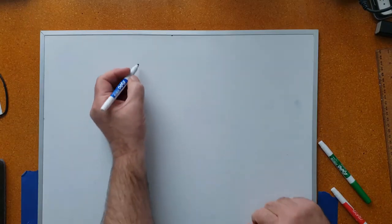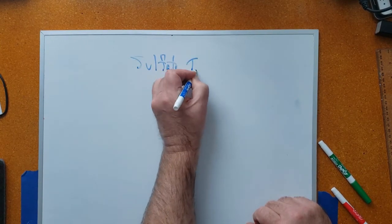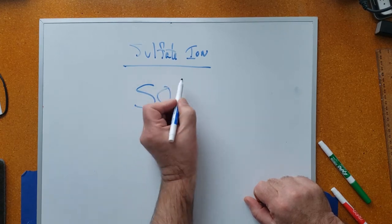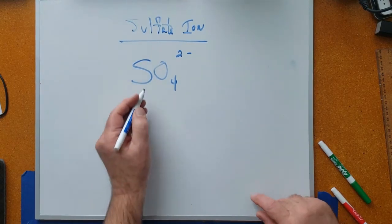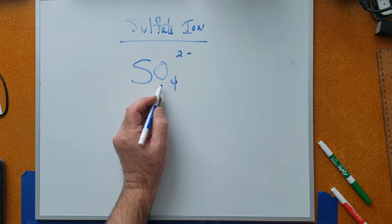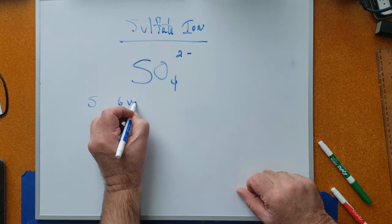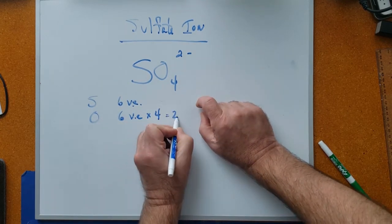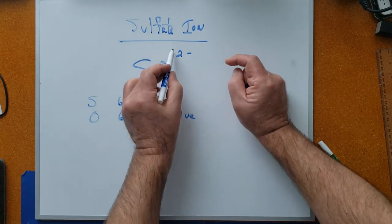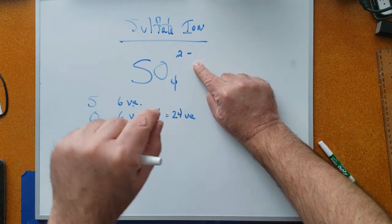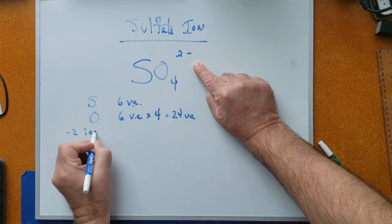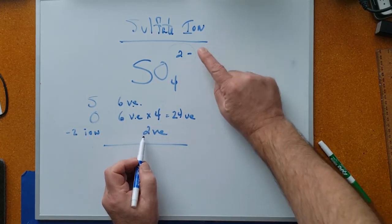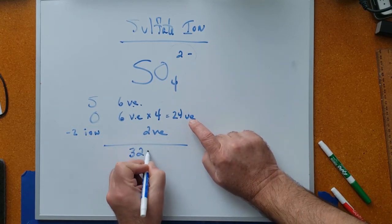Next, the sulfate ion. Looking it up on the polyatomic ion list, it's SO₄ with a charge of two minus. Counting valence electrons: sulfur is in group six with six valence electrons, and oxygen also in group six has six valence electrons times four oxygens, giving 24. For the negative two charge, we add two electrons. So: 6 from sulfur plus 24 from oxygen plus 2 for the charge gives us 32 valence electrons total.